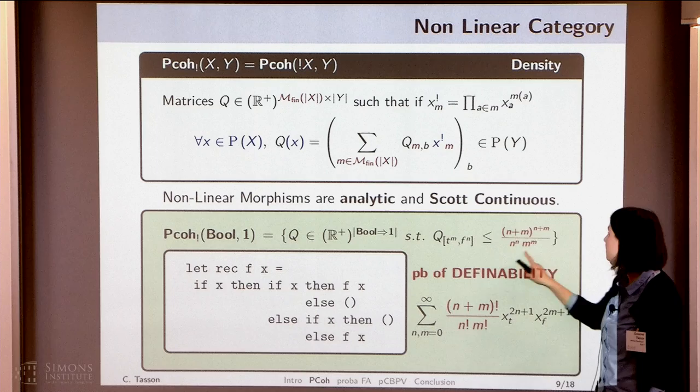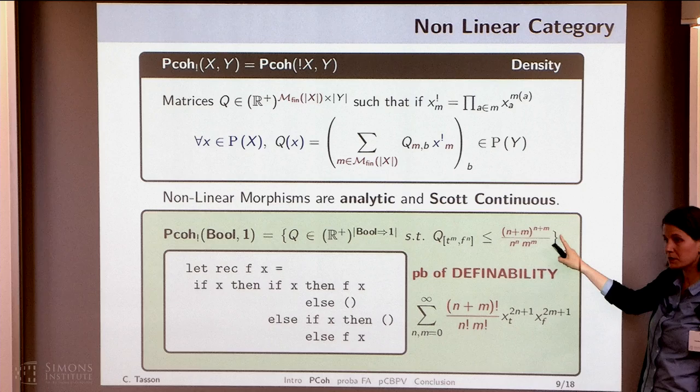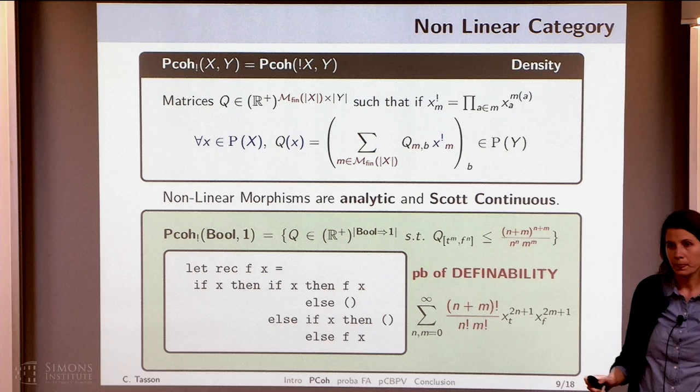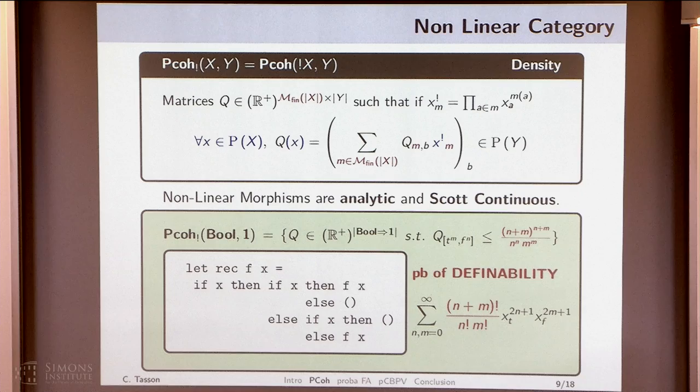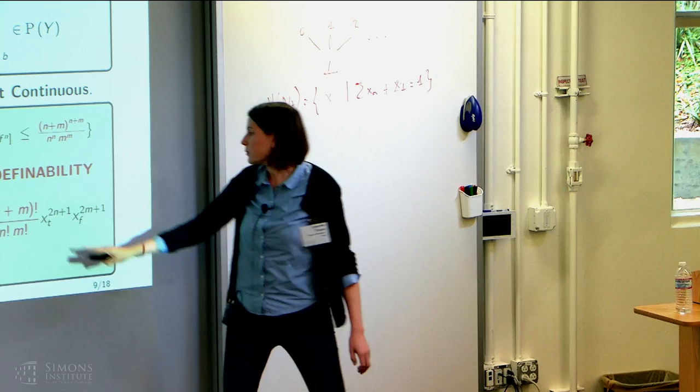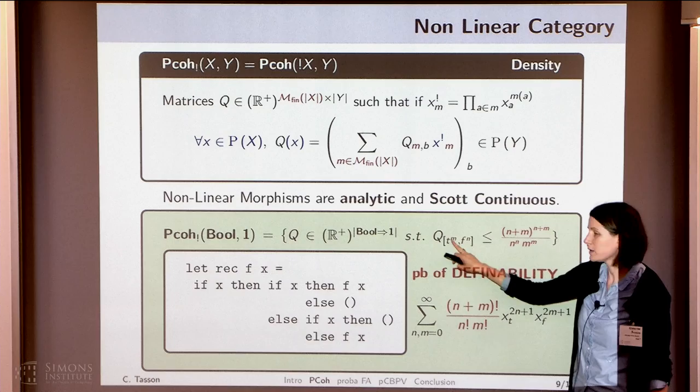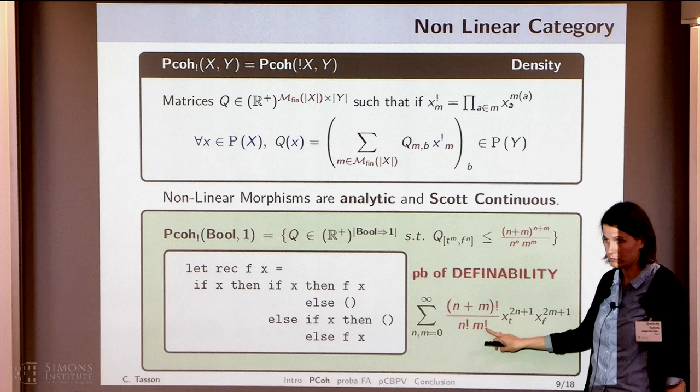There is a question: is there a meaning to these coefficients in terms of computation paths? Yes — they represent two things: the probability of getting this multi-set, and the number of paths to get this multi-set. That is why the coefficient can be bigger than one.